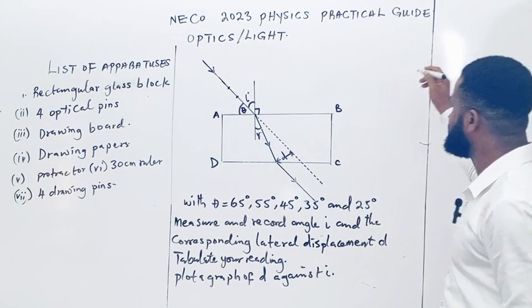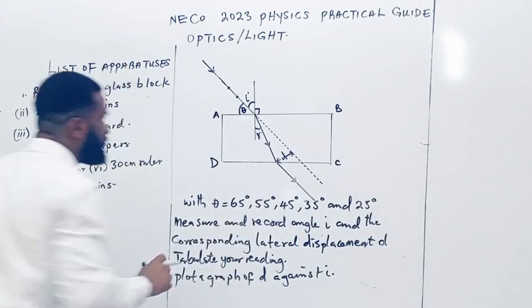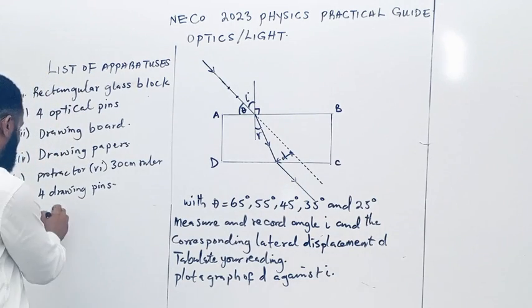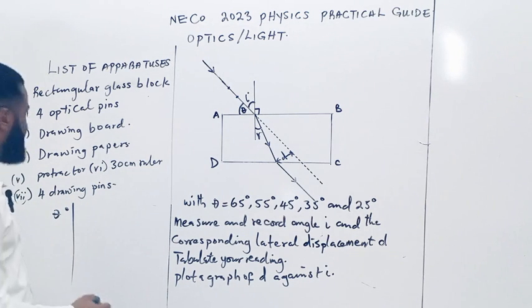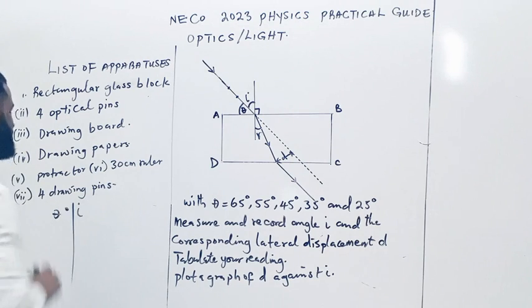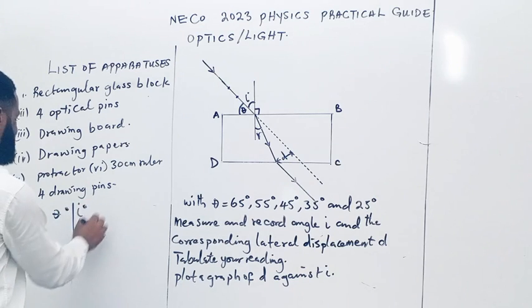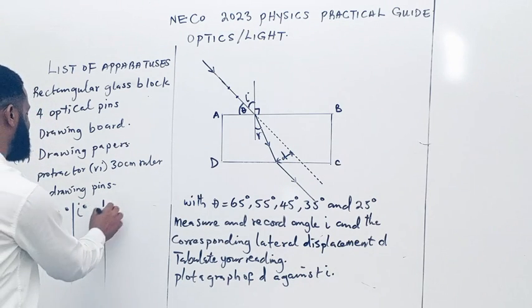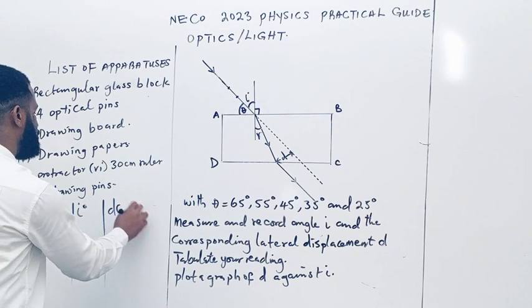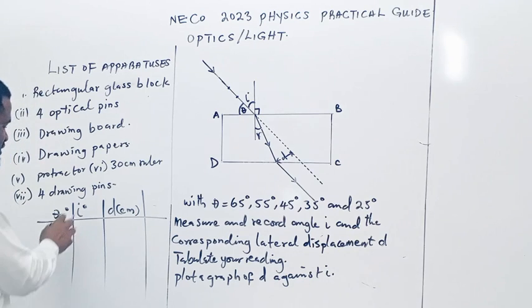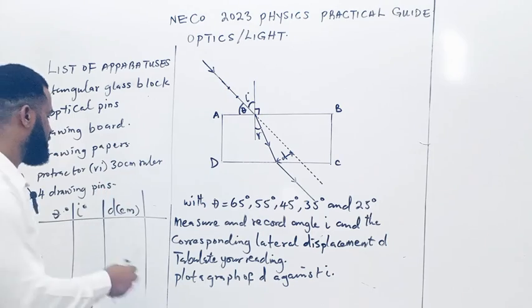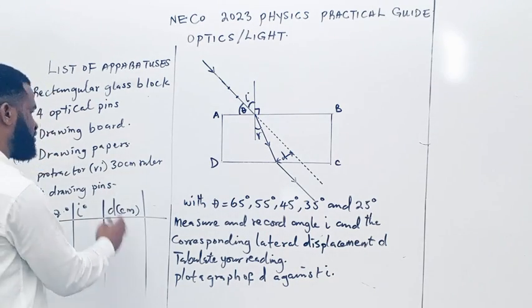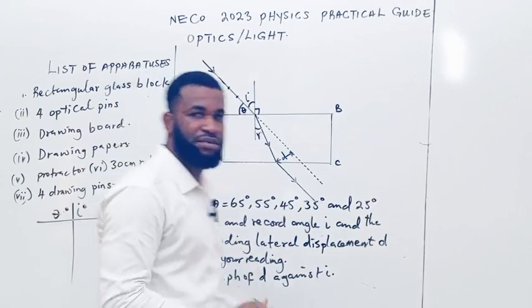Our table is going to have theta in degrees, then I which is the incident angle in degrees, then D in centimeters. You must write the units of measurement. This one must be in degrees, and D is in centimeters. So let's go to the lab and carry out the experiment.